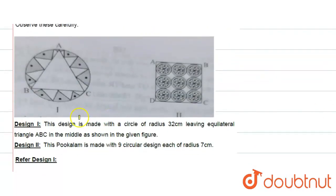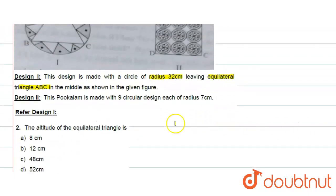So, in design 1, the design is made with a circle of radius 32 cm, leaving equilateral triangle ABC in the middle as shown in the given figure. Design 2, this pokalum is made with 9 circular designs, each of radius 7 cm. Refer design 1. So, here we refer design 1, we will ignore design 2. We are asked the question: the altitude of an equilateral triangle is?